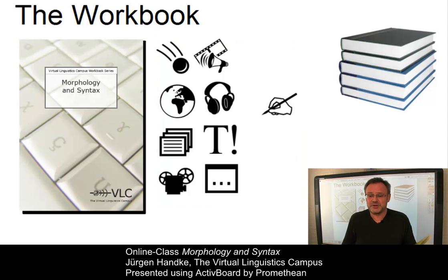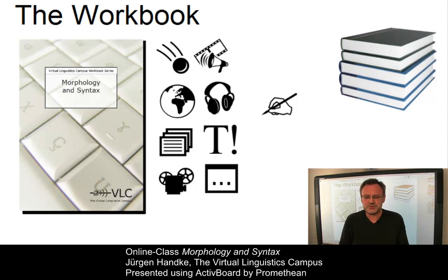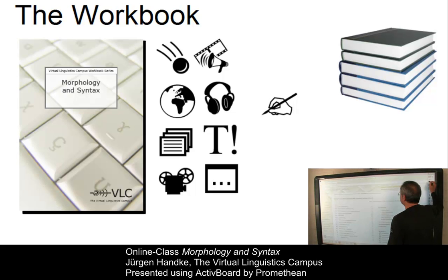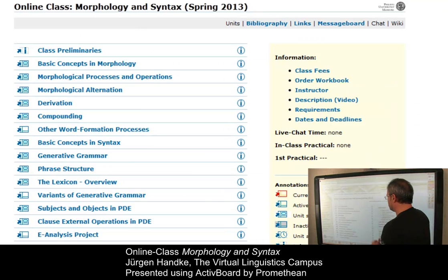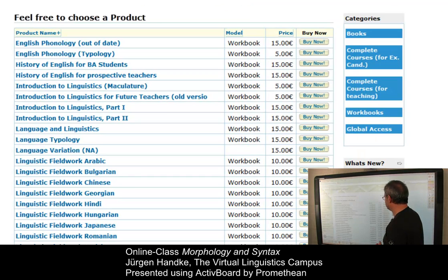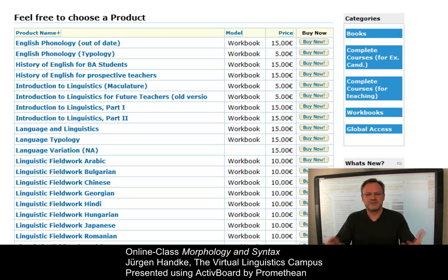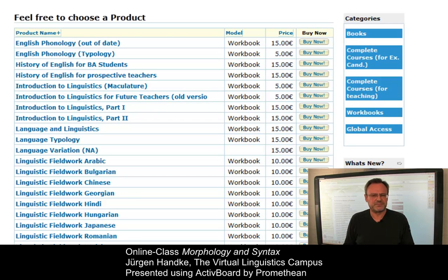So the workbook is not a plain reader, but rather an instructional book that really makes you work. Ordering the workbook is simple: go to the class start site, click on the link 'order workbook', and select your workbook from the list of workbooks that are available in the VLC shop. The rest is simple — just like in any other internet shop, it should be self-explanatory.